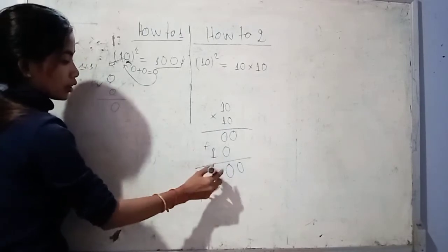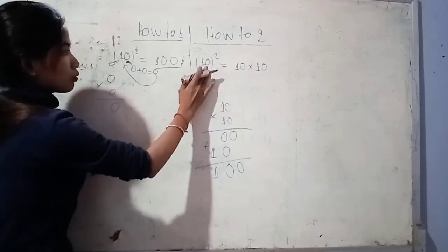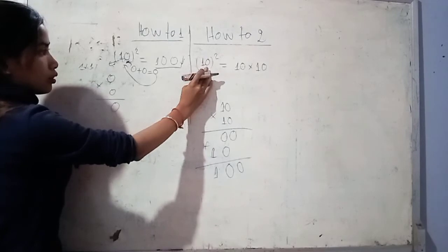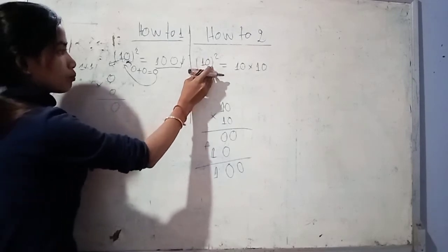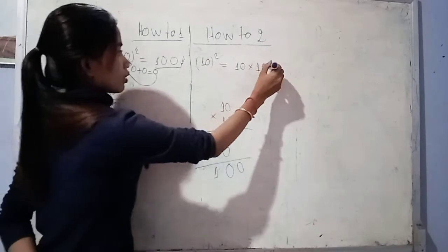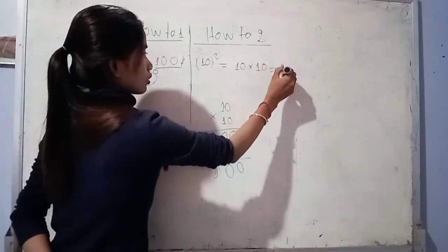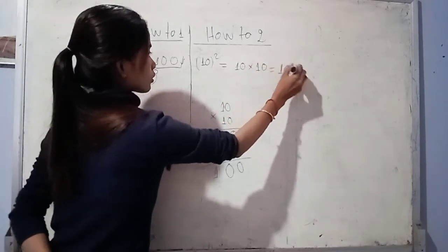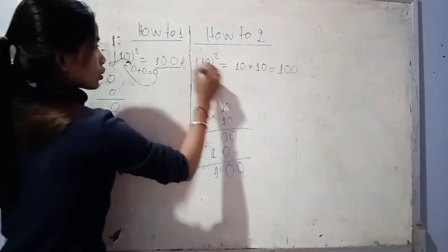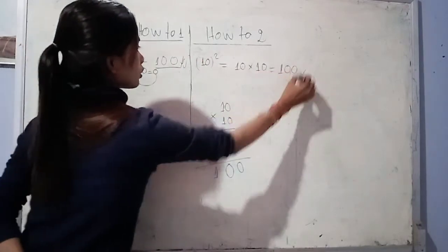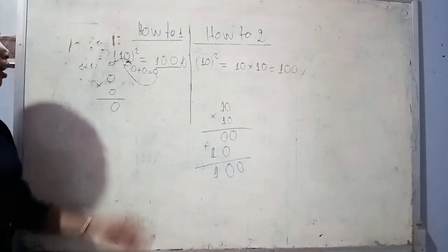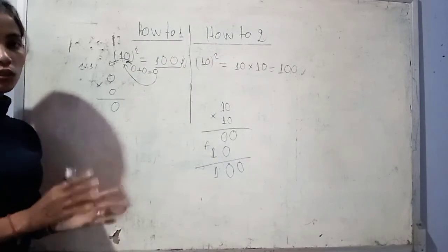Ten exponent two is 100. The same — 100, the same.